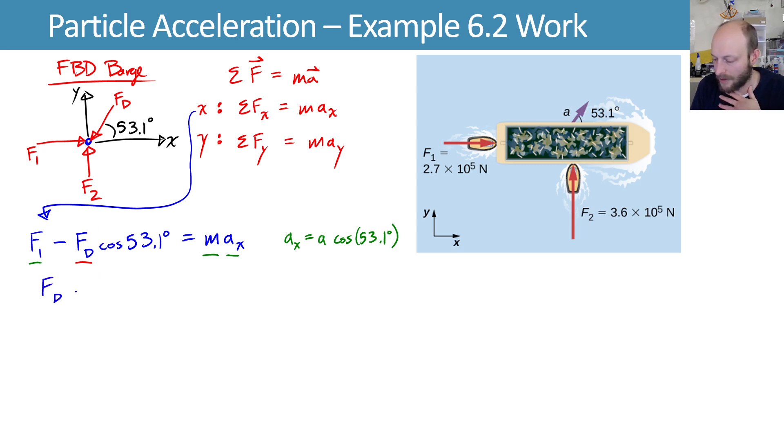so that we get fd times cosine of 53.1 degrees is equal to f1 minus max. And then we can divide both sides by the cosine of 53.1 degrees to get an expression for fd as f1 minus max over cosine of 53.1 degrees.